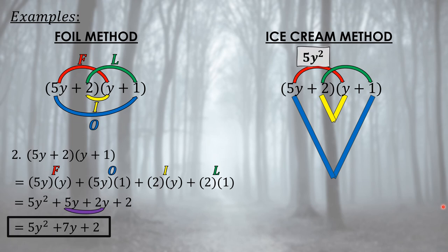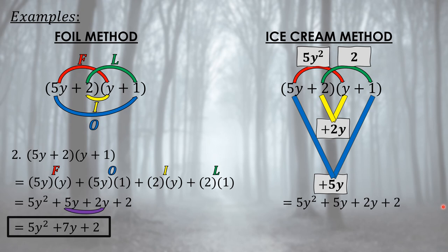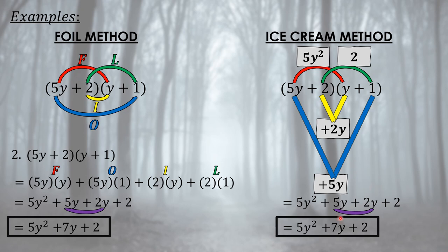Using the ice cream method on (5y + 2)(y + 1): 5y times y = 5y squared; positive 2 times positive 1 = positive 2; positive 2 times y = positive 2y; 5y times positive 1 = positive 5y. Combining: 5y squared plus 5y plus 2y plus 2, and the final answer is 5y squared plus 7y plus 2 — the same as the FOIL result.